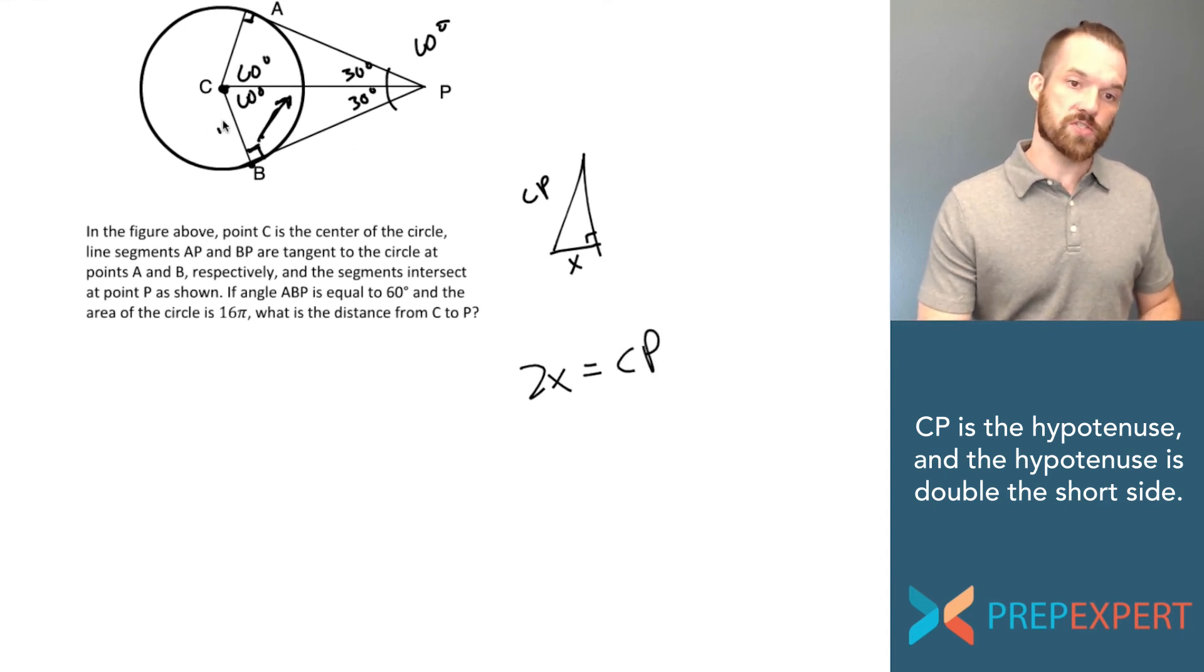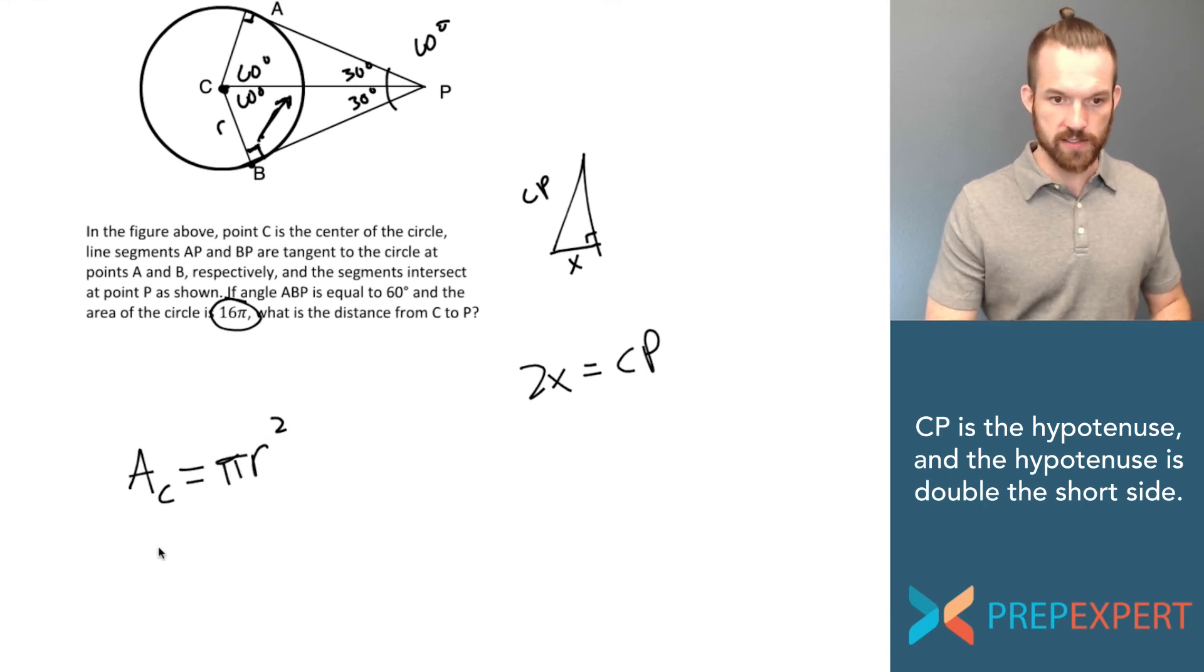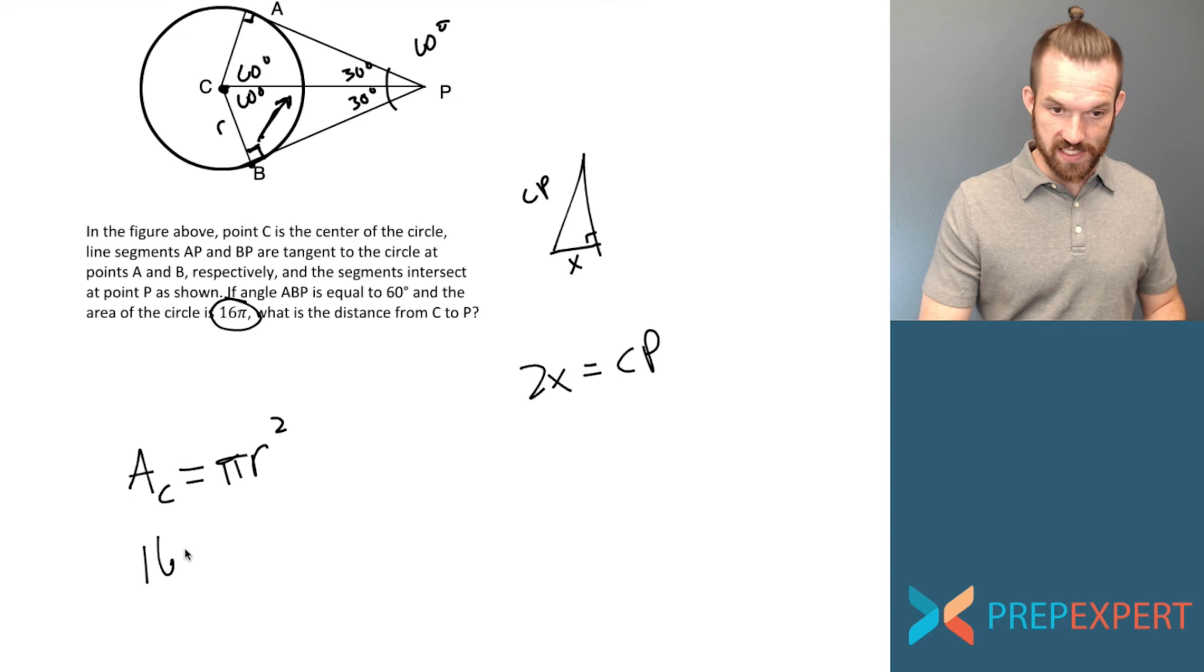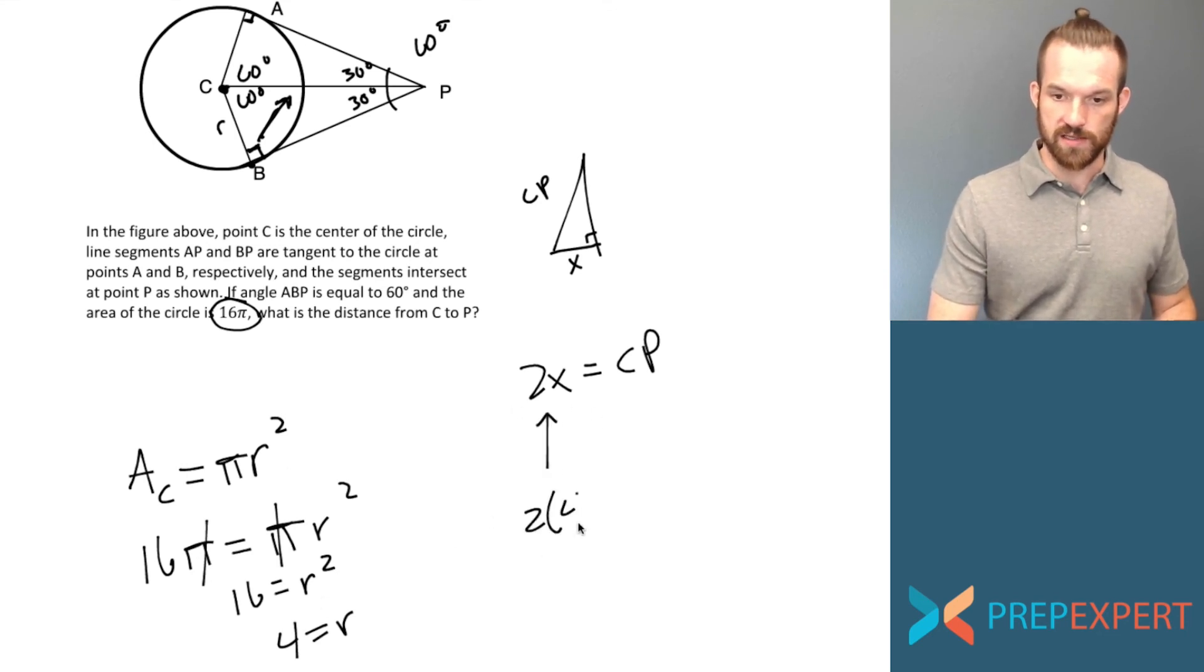So how do I find my short side length? Well in this case, the short side is a radius of the circle and I know that the area of the circle is 16 pi. I also know that the area of a circle is equal to pi times the radius squared, or pi r squared. In this case, 16 pi equals pi r squared. So I can cancel the pi's on each side—it looks like 16 equals my radius squared. Take the square root of each side, 4 is my radius. Since 4 is my radius, I will double that 4 to find the length of CP. It looks like CP is 8 units long.